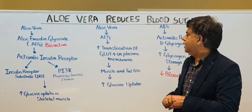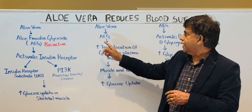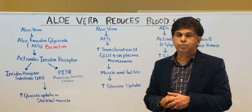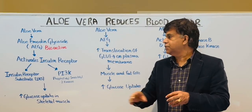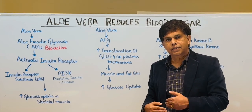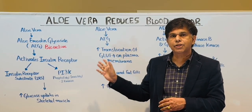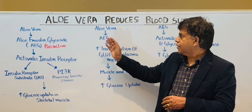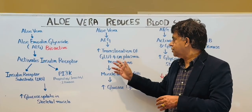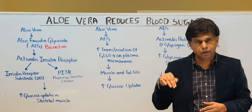The next mechanism is called translocation. Aloe vera, again through Aloemidine Glycoside, increases the translocation of glucose uptake transporter 4 — GLUT4 — onto the plasma membrane. You need to move GLUT4 into the plasma membrane so insulin can facilitate glucose entry into the cell. Insulin acts through translocation of GLUT4, and aloe vera's compound Aloemidine Glycoside helps accomplish that, increasing GLUT4 translocation and driving glucose into the cell so blood glucose levels go down.